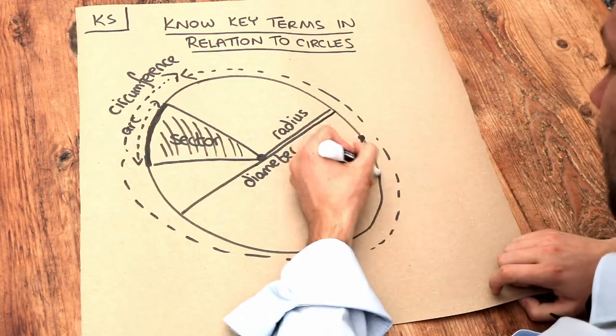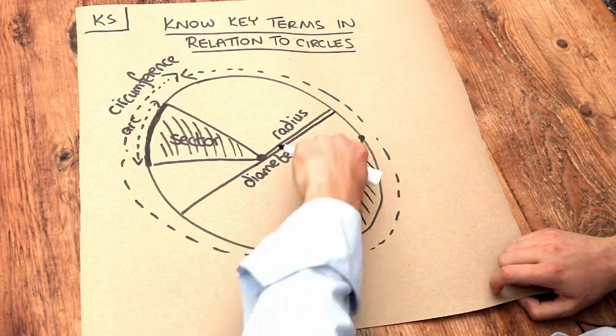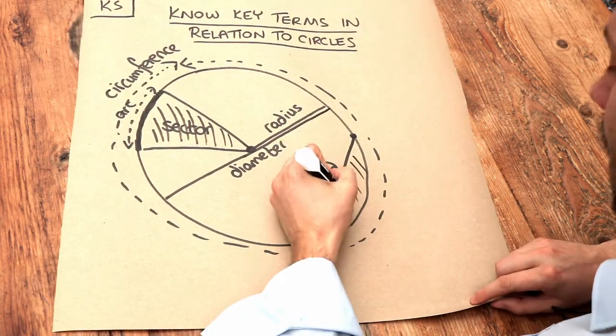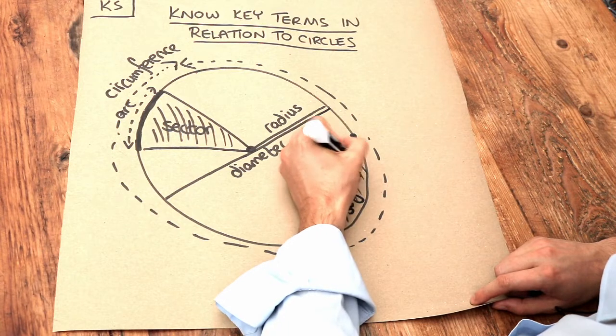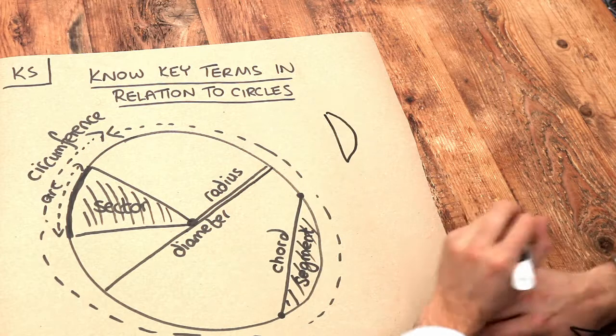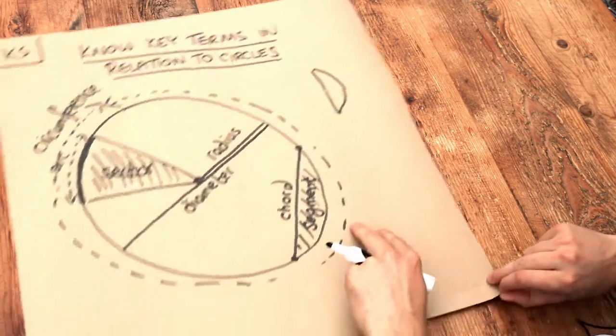And this area that's between the chord and the circumference of the circle is known as a segment. The way I remember segment is that it looks a bit like an orange segment. An orange segment has that kind of shape, doesn't it? And that's why it's called a segment.